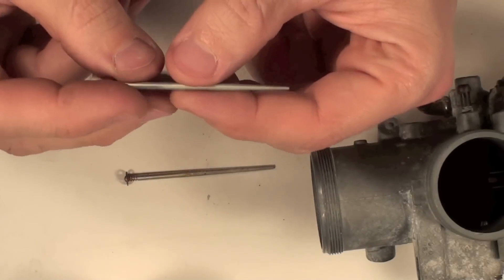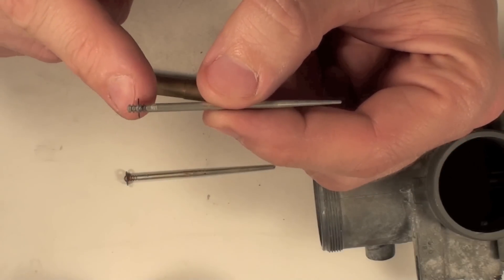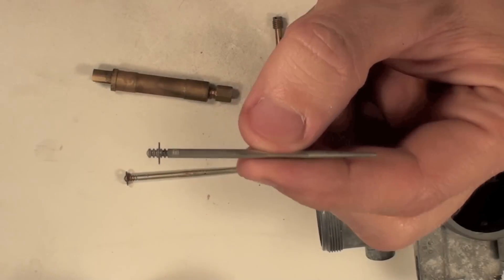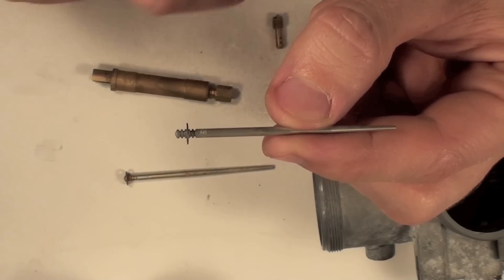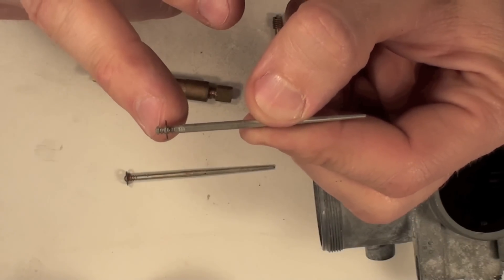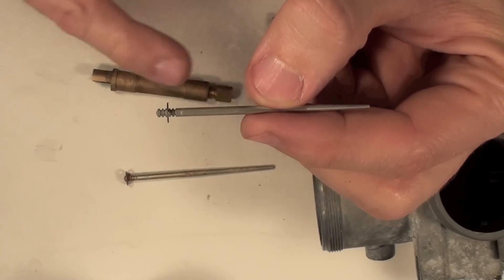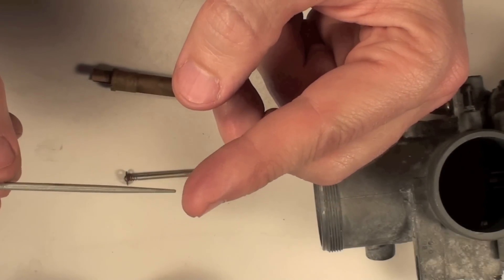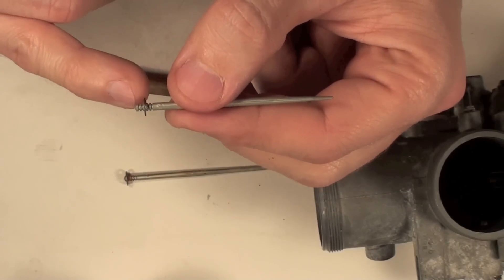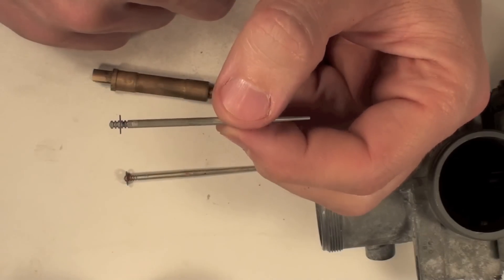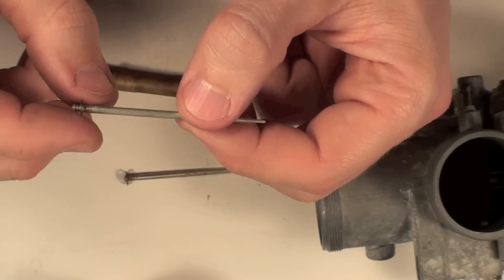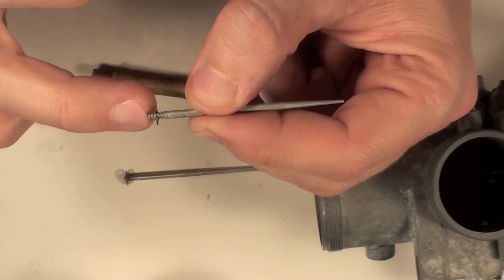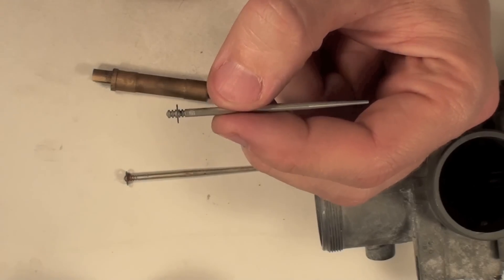One other small adjustment you can make is on this needle itself here, you can see there's a little circlip. See a little circlip and there are notches. If you want to run your engine a little richer or leaner, you can do so with this little circlip. If you move it down, you'll run richer because it'll sit higher inside the needle jet. If you raise it here, then the needle will sit lower and it'll actually cause a leaner mixture because it's sitting lower. If you run out of settings on this needle, then you need to change the size of your main jet and then work with that one as well.